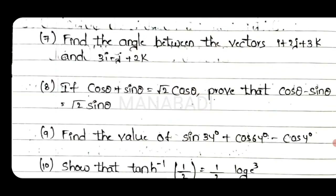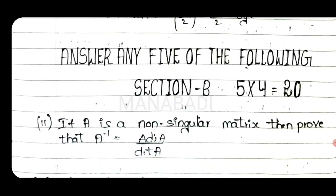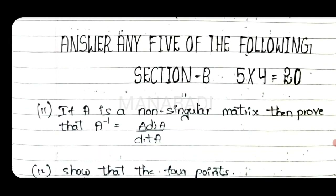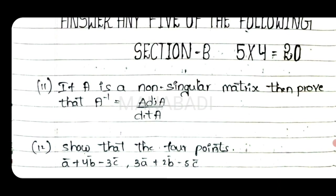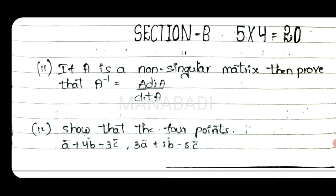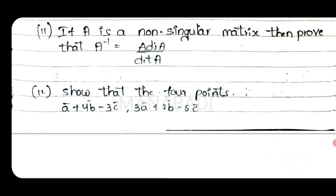Short answer questions — Section B, answer any 5 of the following. One question carries 4 marks. If A is a non-singular matrix, prove that A inverse equals adjoint A by det A.